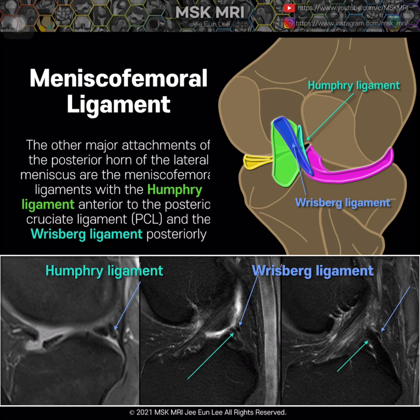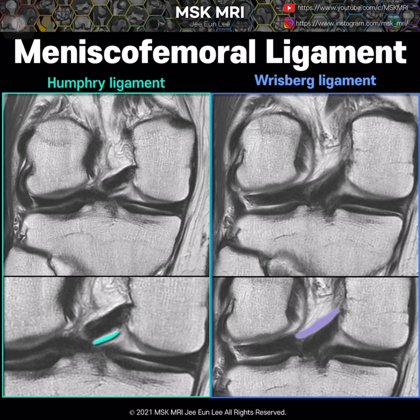On coronal images, we can see the Humphrey ligament here and Wrisberg ligament here. These structures on coronal images can also mimic a displaced meniscus fragment, but this is the meniscus femoral ligament. I'll see you next time.